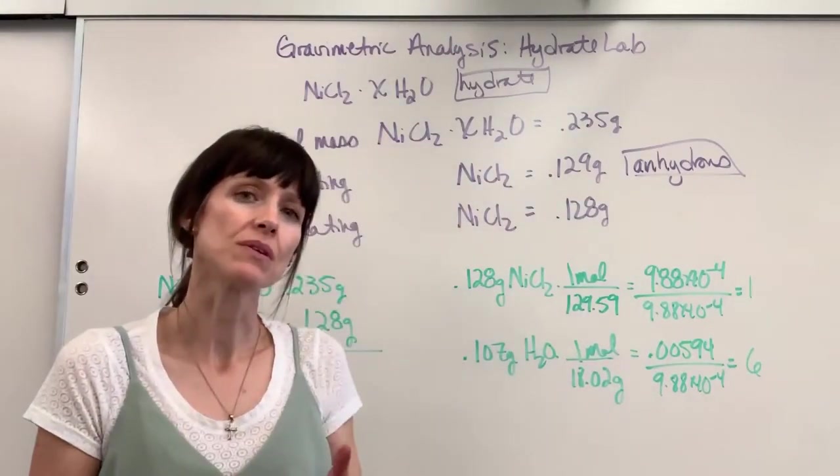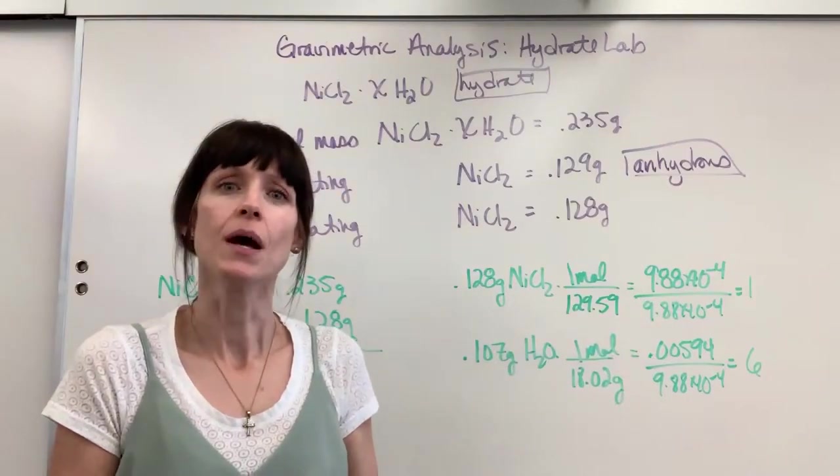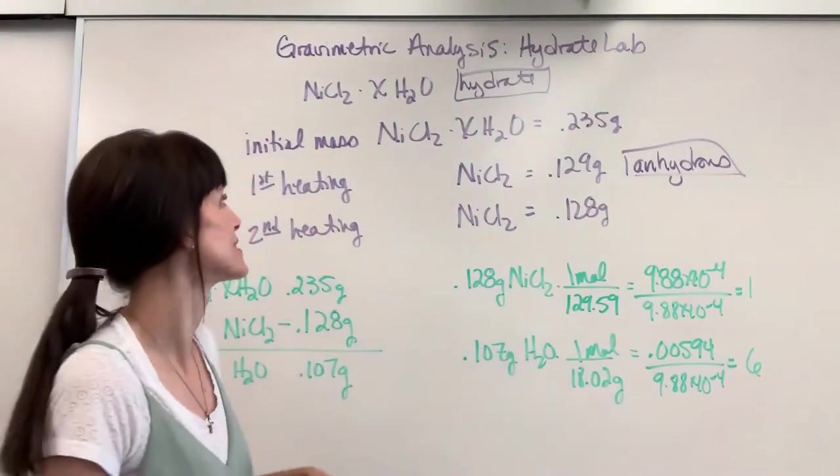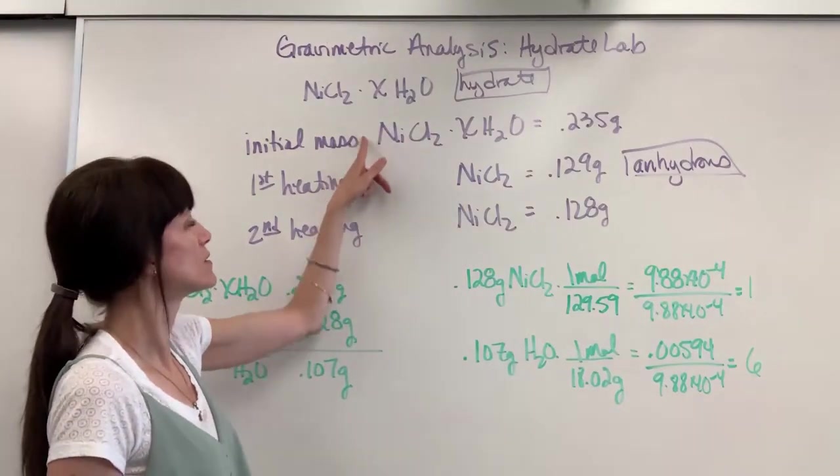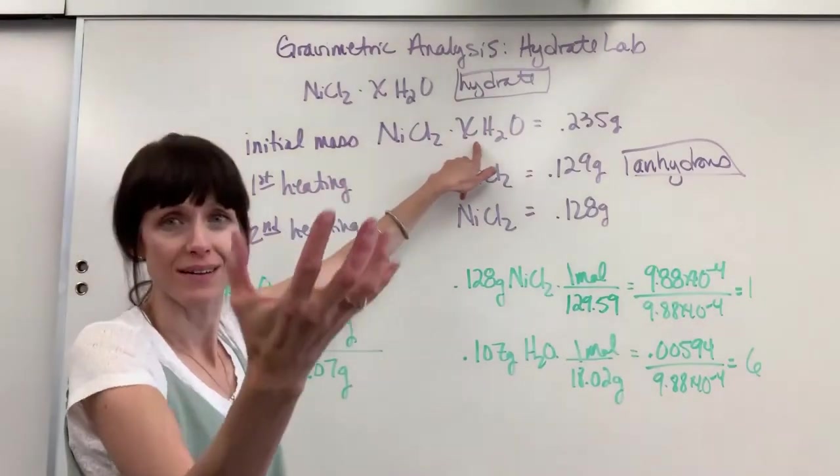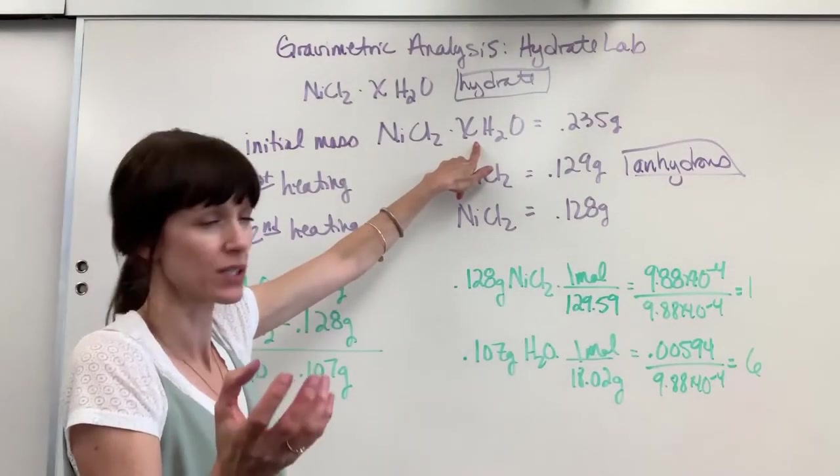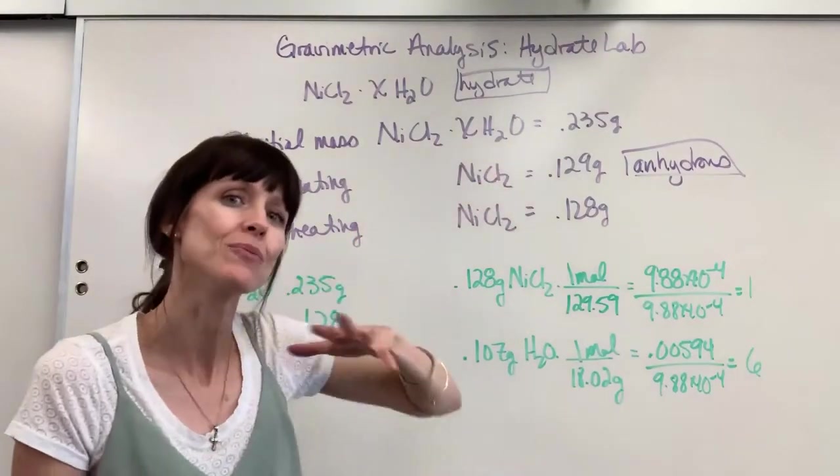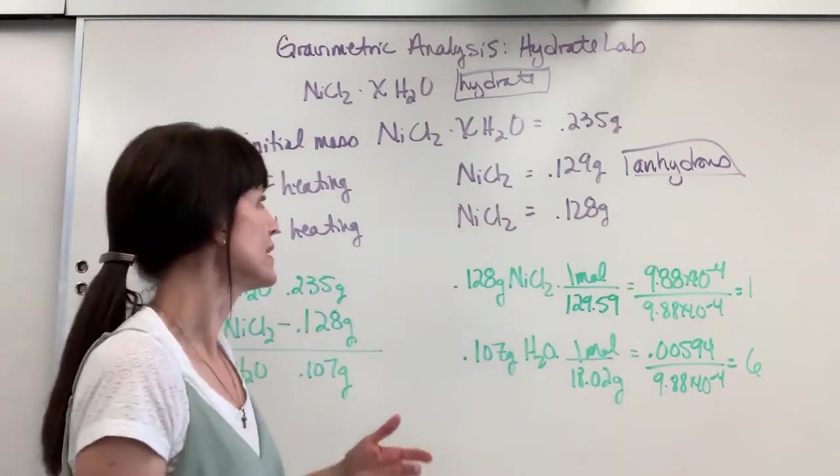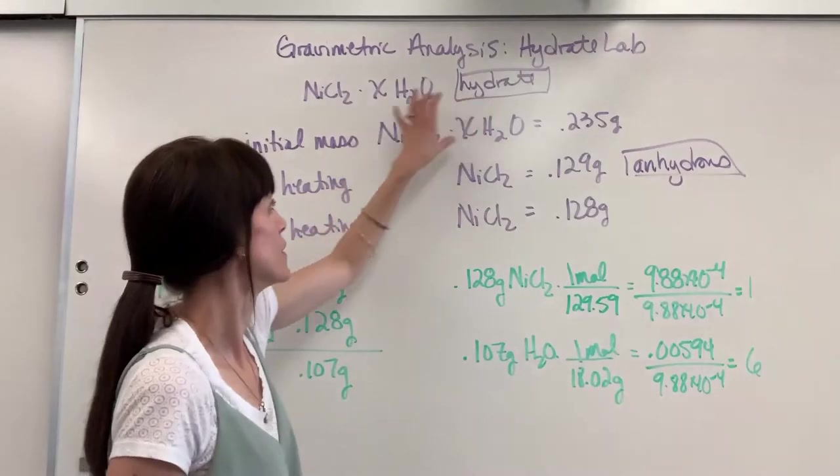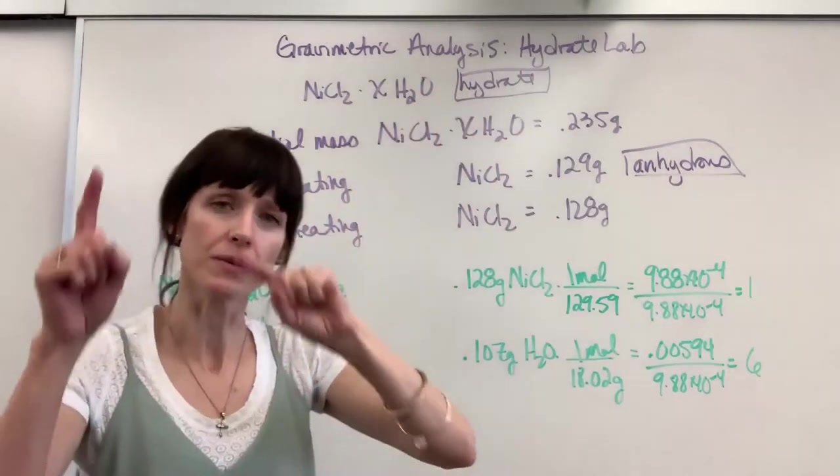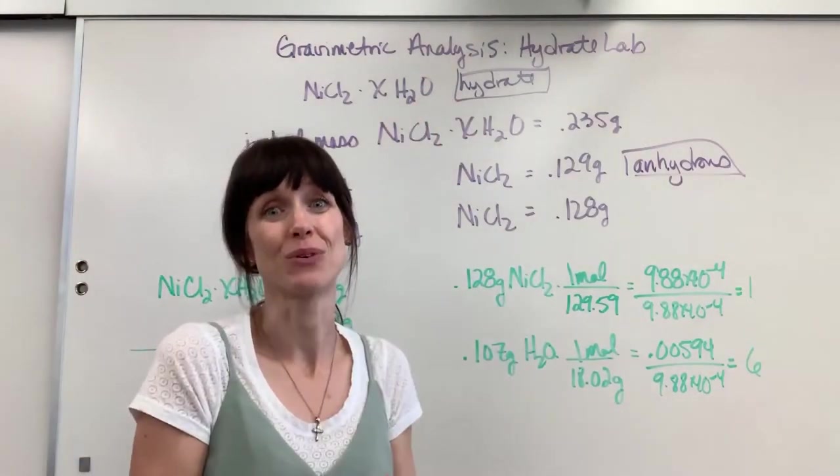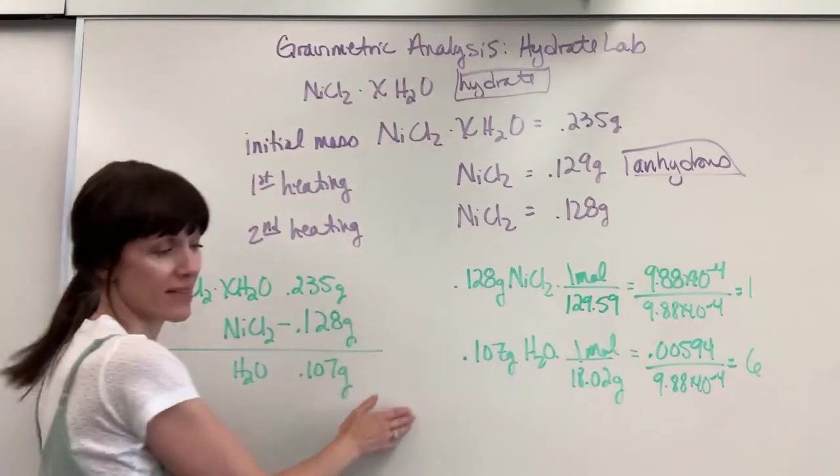Remember, this is really similar to empirical formula because these are molar ratios. One mole of nickel chloride will bond with, this coordination compound, bond with so many moles of water. We need the mass of the salt, the mass of the water. We can bring that to moles, and that's our molar ratio. So look at the math that I've done here.